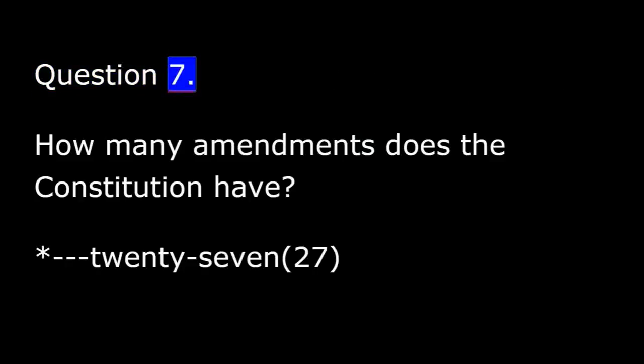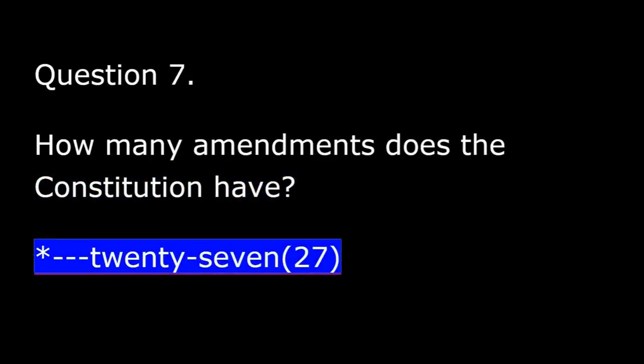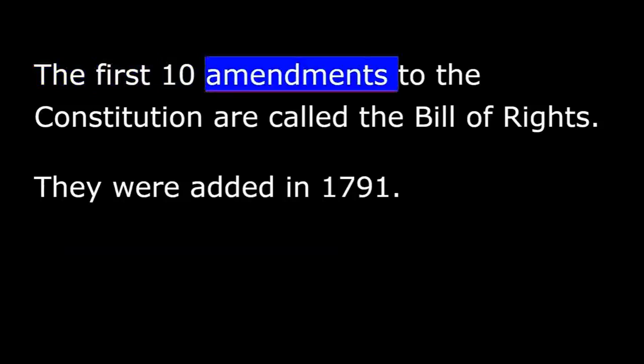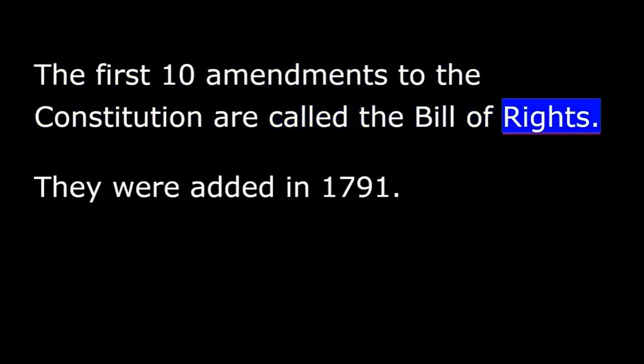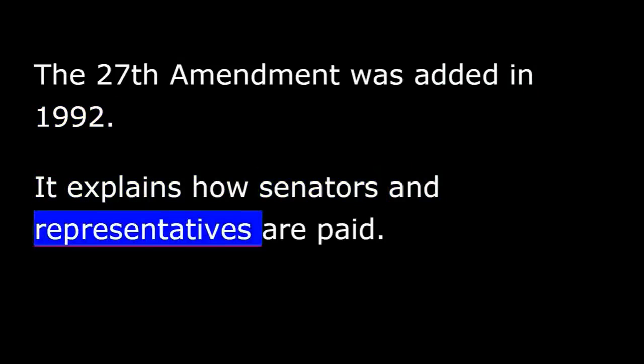Question 7. How many amendments does the Constitution have? Twenty-seven. The first ten amendments to the Constitution are called the Bill of Rights and were added in 1791. Since then, 17 more amendments have been added. The Constitution currently has 27 amendments. The 27th Amendment was added in 1992, and it explains how Senators and Representatives are paid.